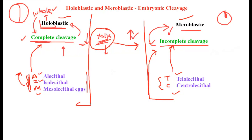So that's all for now. We covered two types of cleavage — holoblastic and meroblastic — and five egg types: AIM is complete (holoblastic) and TC is incomplete (meroblastic). I hope this was helpful and easy to understand. Do subscribe to the channel for a new video every week, and I'll see you next time. Until then, keep learning!